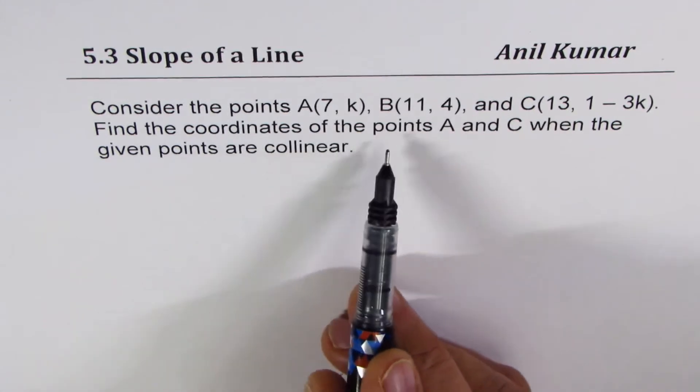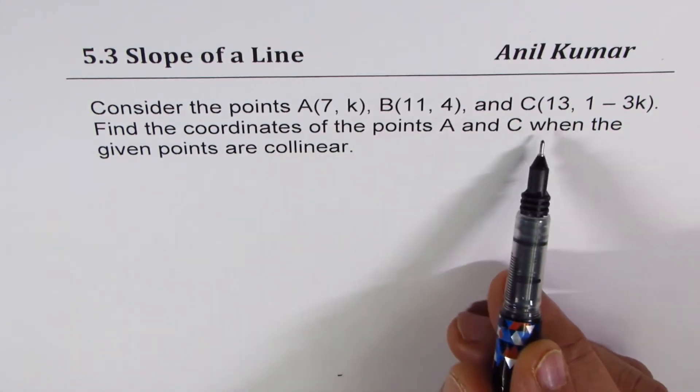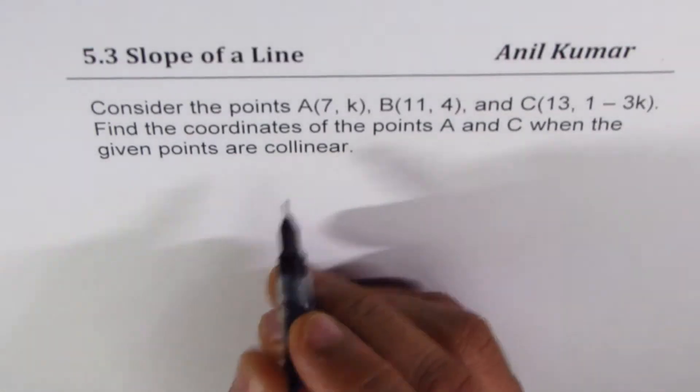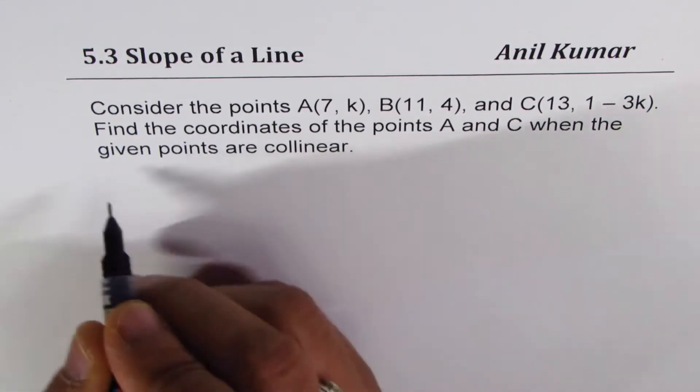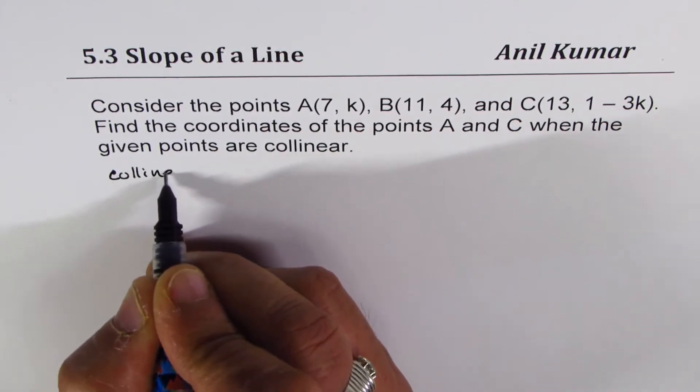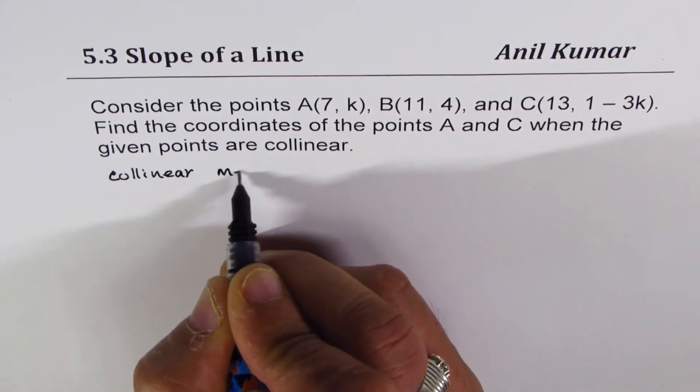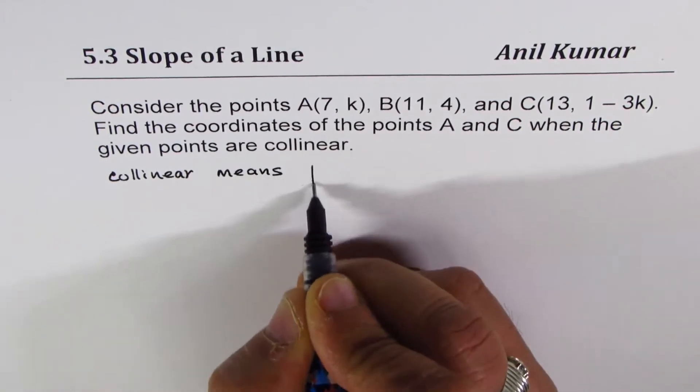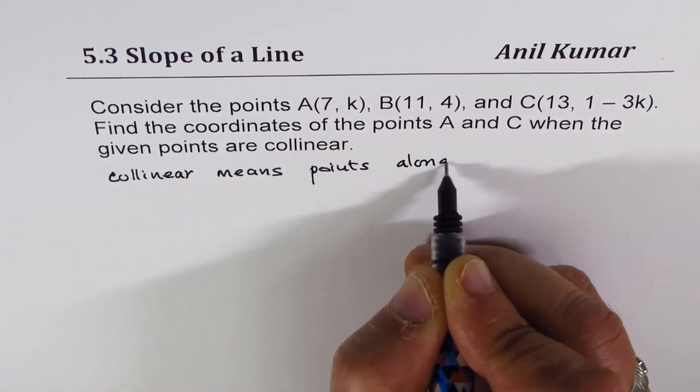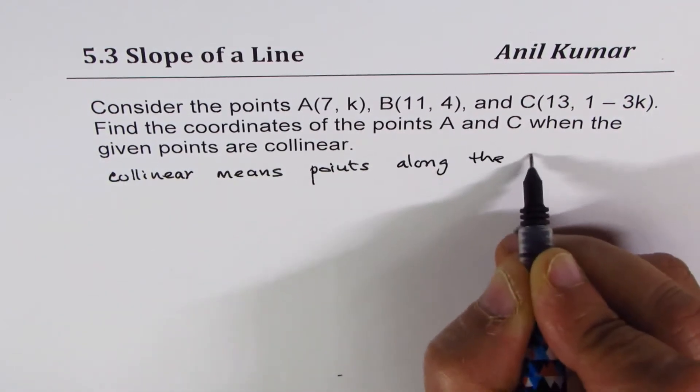Find the coordinates of the points A and C when the given points are collinear. Collinear points means points along the same line. So that is important to understand. Collinear means points along the same line.